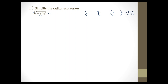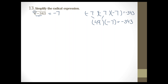The number is negative 7. Negative 7 times negative 7 times negative 7: negative 7 × negative 7 = 49, and 49 × negative 7 = negative 343. Therefore the cube root of negative 343 is negative 7.